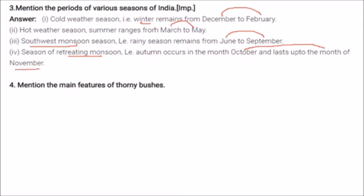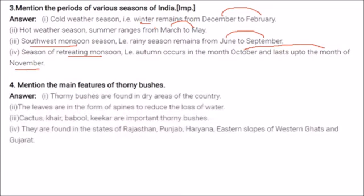Thorny bushes are found in dry areas of the country and their leaves are in the form of spines to reduce water loss. Important thorny bushes are cactus, kher, babul, and keekar. They are found in Rajasthan, Punjab, Haryana, the eastern slopes of the Western Ghats, and Gujarat.